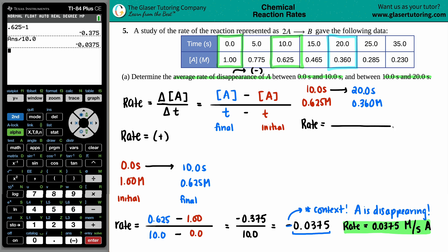Rate equals final minus initial. Final molarity is 0.360 at 20.0 seconds, minus initial: 0.625 at 10 seconds. A is still decreasing so we're looking at a negative value. 0.360 minus 0.625 gives -0.265, over 20 minus 10 which is 10. Divide by 10, and there's the rate: -0.0265.